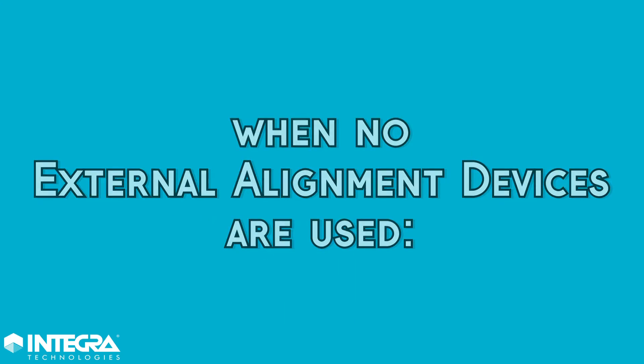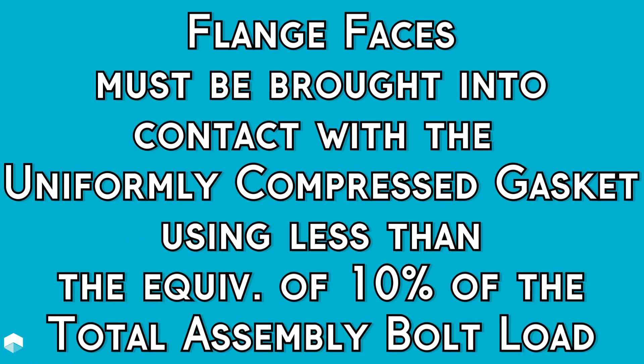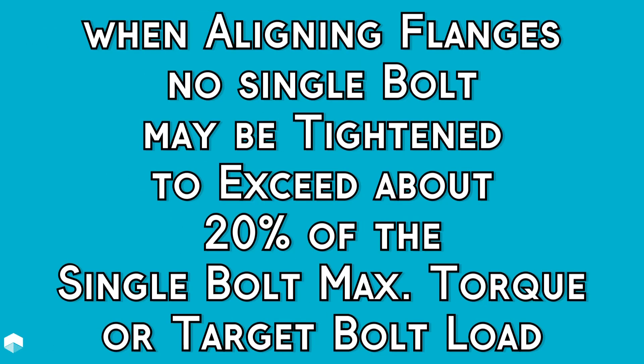When no external alignment devices are used, the flange faces should be brought into contact with a uniformly compressed gasket using less than the equivalent of 10% of the total assembly bolt load. When aligning the flanges, no single bolt should be tightened to exceed about 20% of the single bolt maximum torque, or target bolt load.